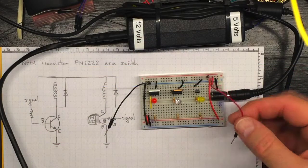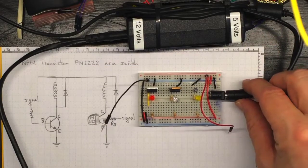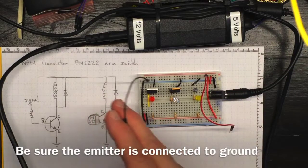This red lead is connected to the positive side. There's a 5 volt supply coming in here, and this black lead is connected to ground.